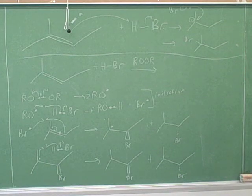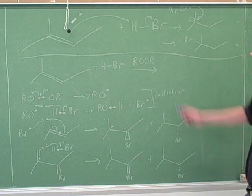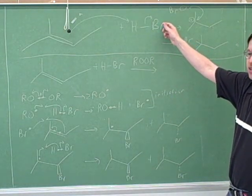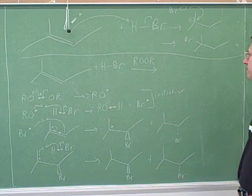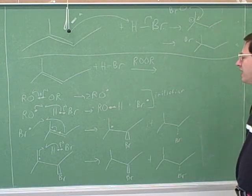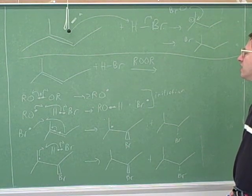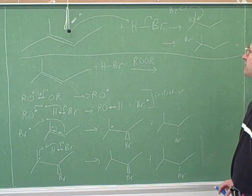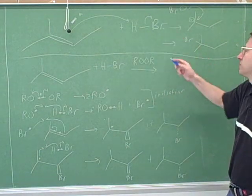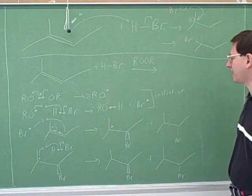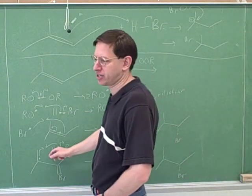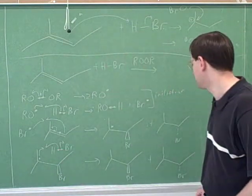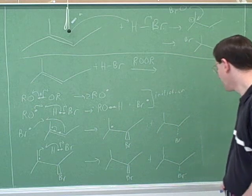So is this Markovnikov or anti-Markovnikov? Anti-Markovnikov. And you want to compare that with the example without the peroxides. Without the peroxides, we got the same addition of hydrogen and bromine, but it was Markovnikov. Without the peroxides, the bromine attaches second, so it attaches to the more substituted carbocation. But with the peroxides, the hydrogen attaches second, so it attaches to the more substituted radical.